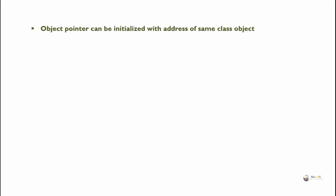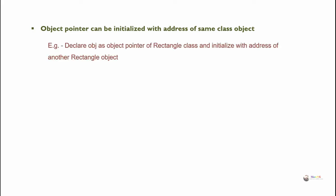An object pointer can be initialized with the address of a same-class object. For example, declare obj as an object pointer of the rectangle class and initialize it with the address of another rectangle object x. First we create a normal rectangle object x, then we create a pointer object: rectangle star obj, which is initialized with the address of rectangle object x.